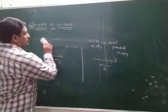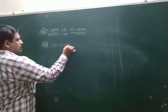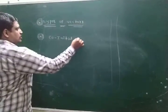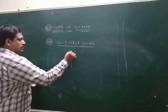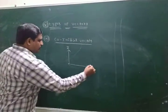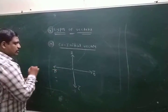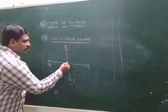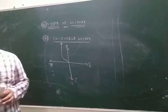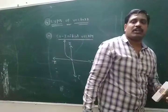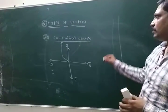Unlike vectors are anti-parallel vectors. Co-initial vectors: this is vector A bar, this is vector B bar, this is vector C bar, this is vector D bar. All vectors have the same starting point — those vectors are called co-initial vectors. Co-initial vectors means all the vectors' starting point is the same.